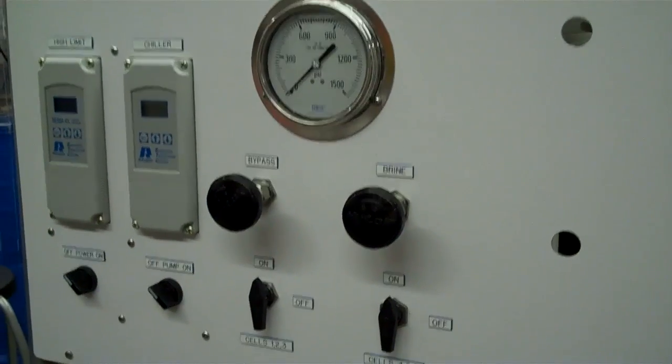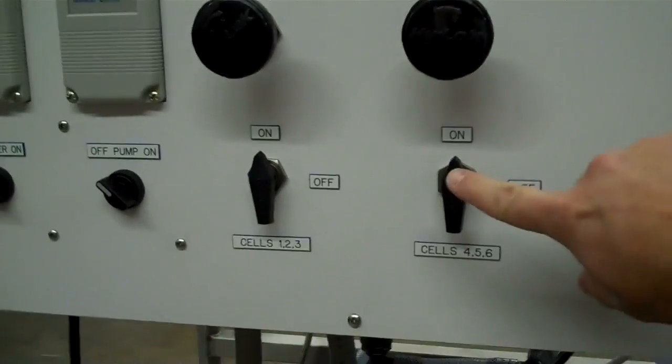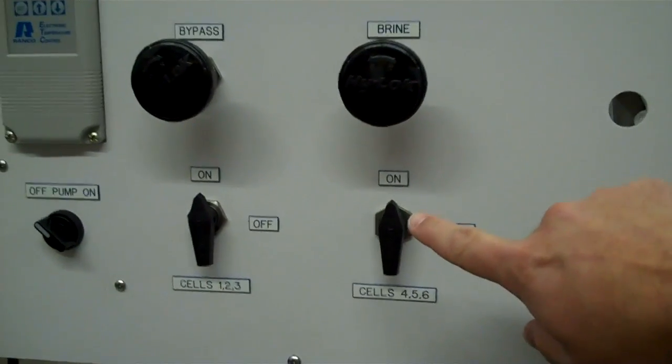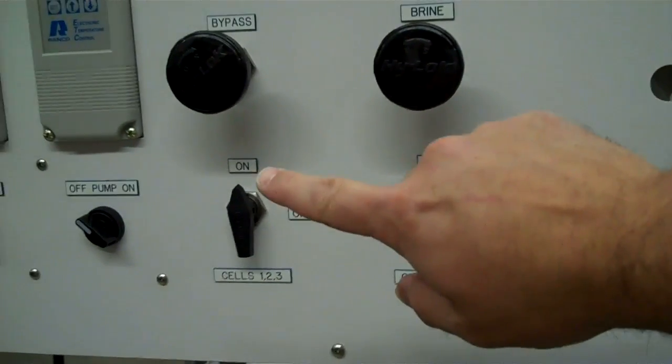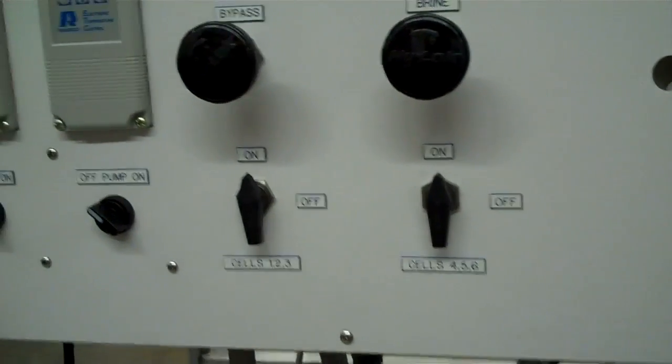You can see the knobs, one for the brine, one for the bypass. And then this area here is where you can change which set of cells you want to run. Cells one through two, three on or off. Cells four or five, six on or off.